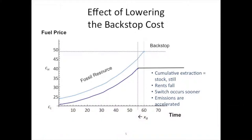This backstop is already available — by assumption it's available any time; before the switchover it's just expensive. Cellulosic ethanol is available right now, it's just really expensive, so we're not going to be using it. You want to use the resource that's relatively cheaper now and then switch to the alternative technology. Notice we don't have a carbon price in here — we're not talking about emissions values — but this is how the market would respond to a competing technology in the hoteling model.